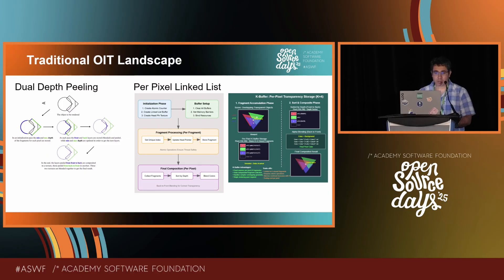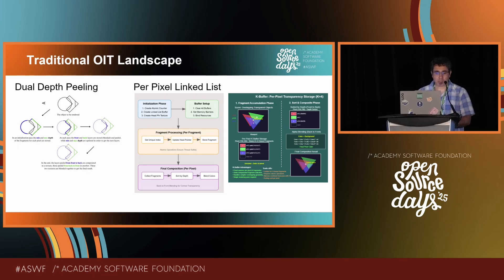Let's talk about some traditional OIT techniques. One of them is called depth peeling. The idea is that you continuously peel multiple depth layers of objects and produce multiple textures that are blended together. In the diagram, a camera looks at the geometry and peels the first visible layer, then the next surface after that, then the rest. All layers are then merged front-to-back or back-to-front to get the correct result. However, with too many surfaces you need continuous peeling and significant memory consumption.